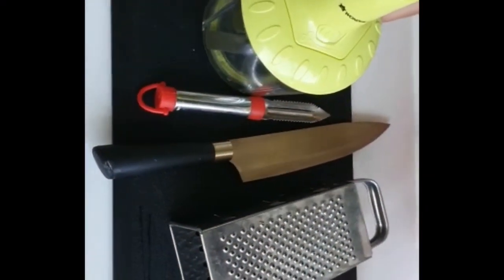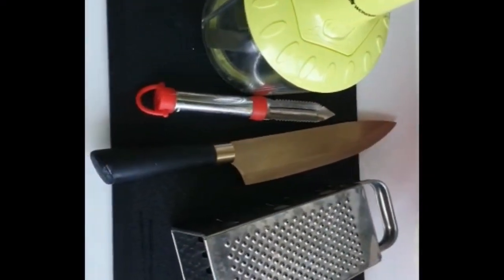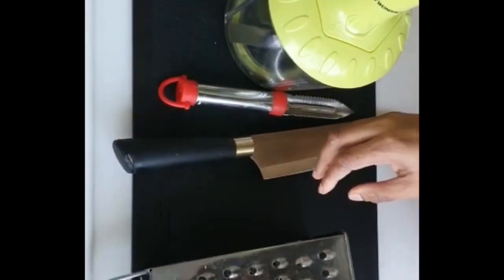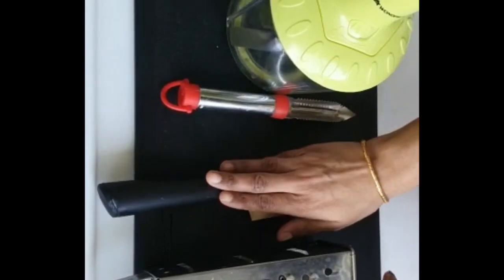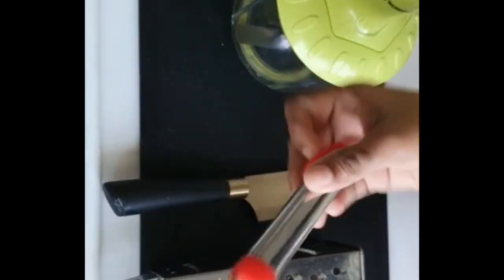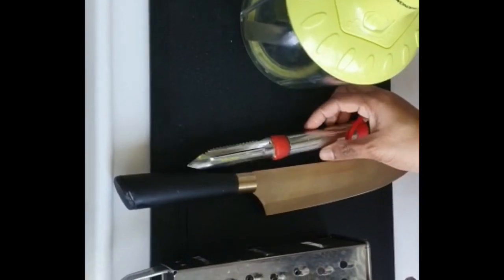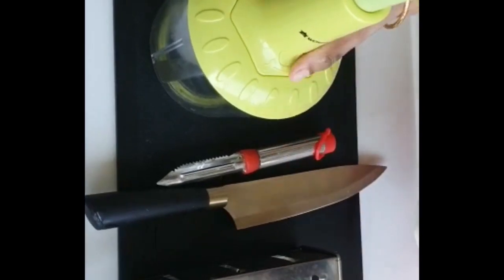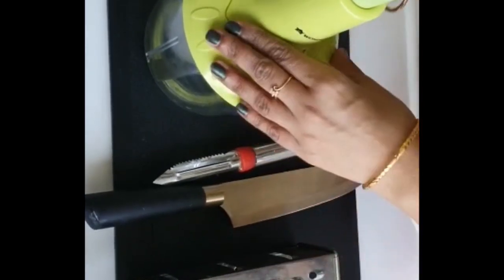So next important thing which we need is one chopping board along with one grater so that you can grate the vegetables very easily, and knife set of different sizes. I am just showing you one here, and one peeler vegetable peeler, and one chopper. This can be manual or automated according to your budget, you can buy it.